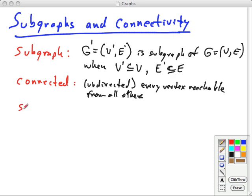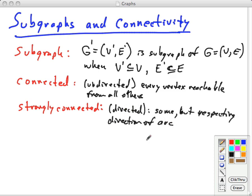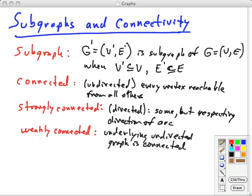And a graph is strongly connected, in the directed case, if this reachability is obtained when you respect the direction of the links. So we respect the direction of the arc. And we sometimes use the term weakly connected, in the case of a directed graph, essentially when we're treating it as an undirected graph. So the underlying undirected graph is connected.